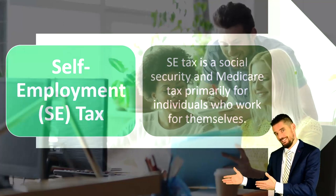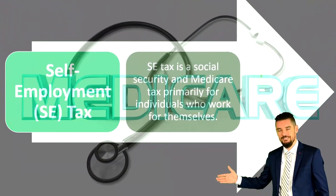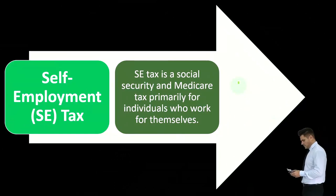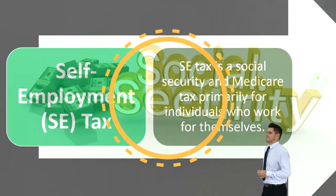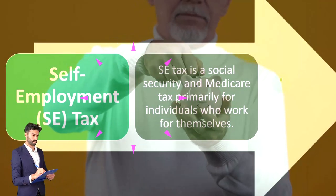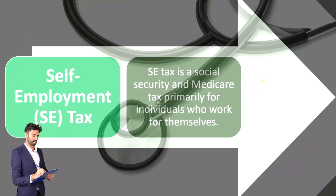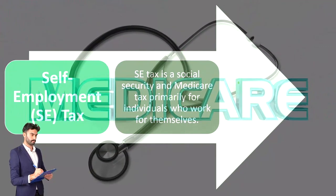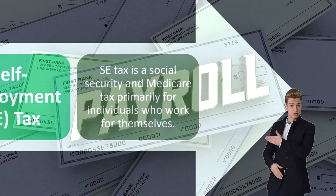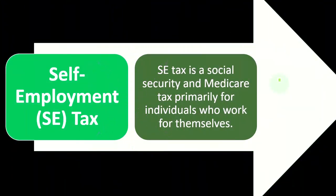So you have an employee half and an employer half. Now, if you're self-employed, the IRS doesn't want you to avoid paying Social Security and Medicare just because you don't have payroll taxes and aren't giving yourself a W-2. They frame it as wanting you to participate in paying into the Social Security system so you can get benefits at retirement age. The IRS essentially takes your Schedule C, looks at the net income, and charges you the equivalent of payroll taxes — both the employee and employer portions. So you're paying a larger amount as a sole proprietor than you would as an employee.